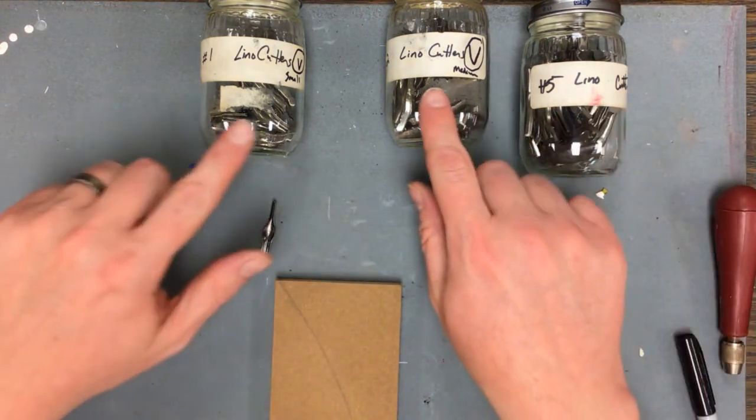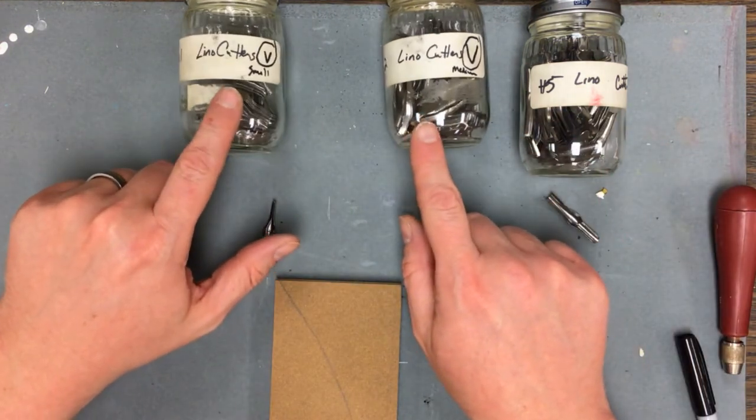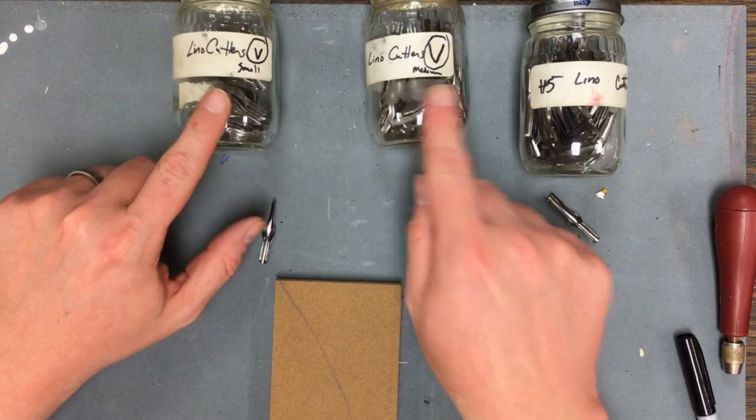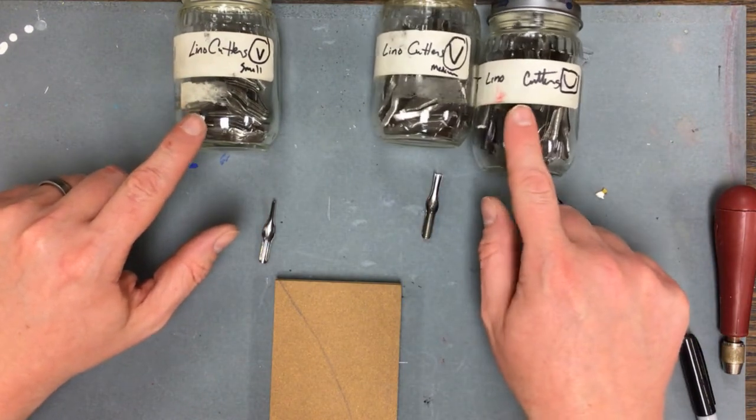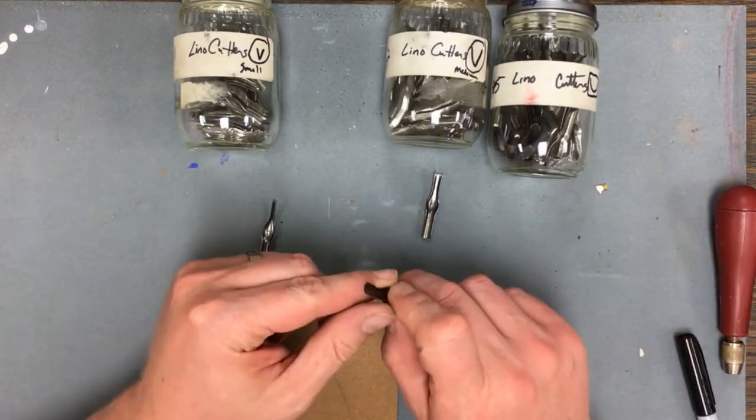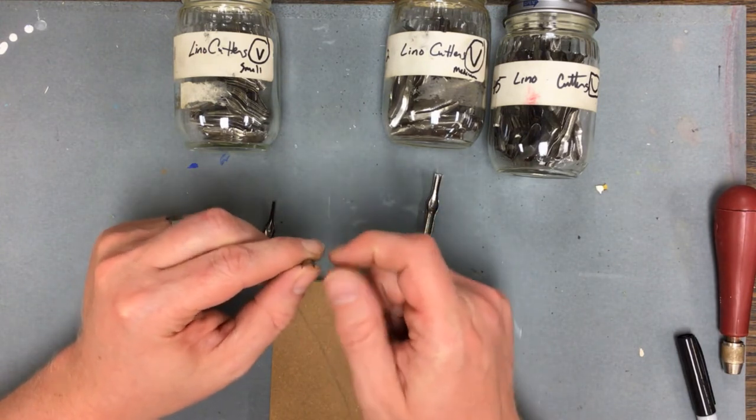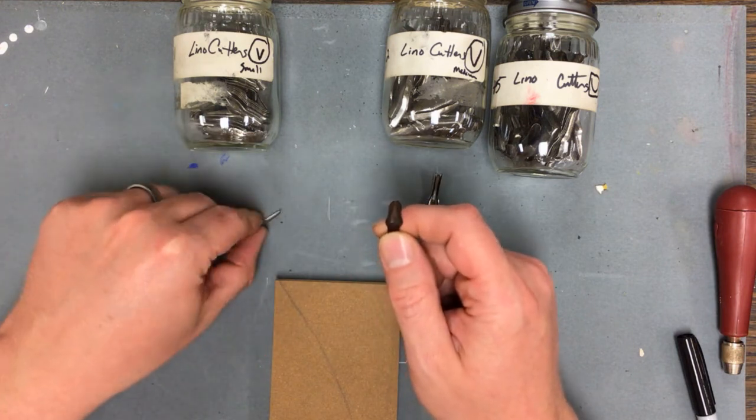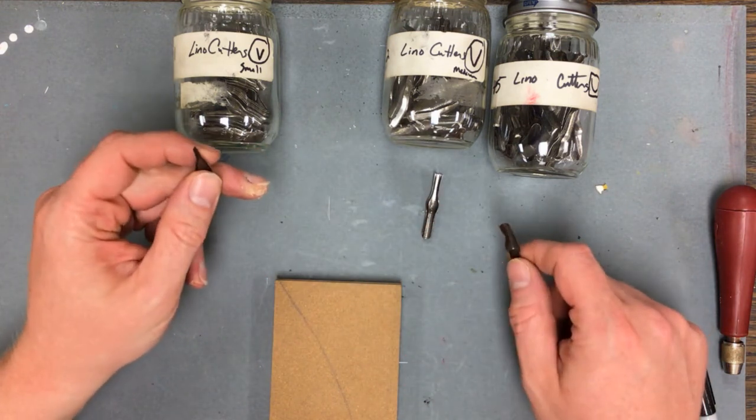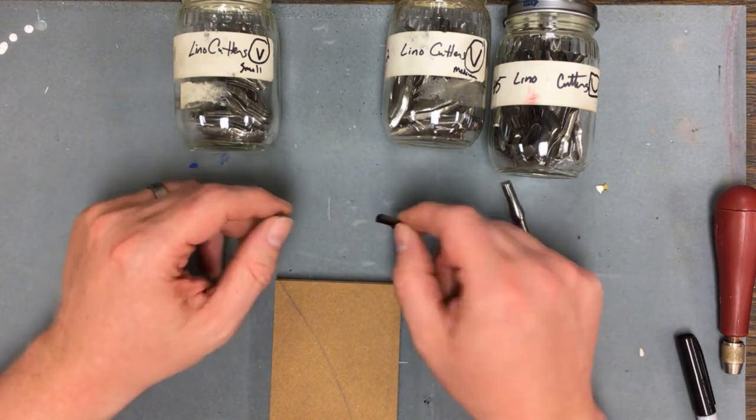So first off, you have three different kinds of linoleum cutters. We have a small v, a medium v, and then kind of a larger deeper cut. Now if you're able to look at this closely, you'll see that the number five is very wide for covering large areas out. The small one is for smaller detail. The medium is just kind of everything in between.